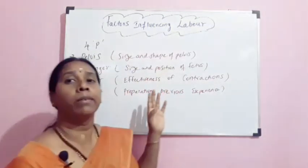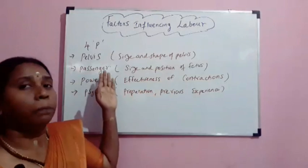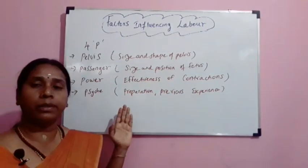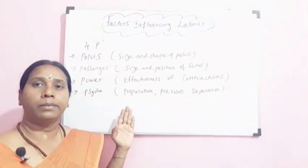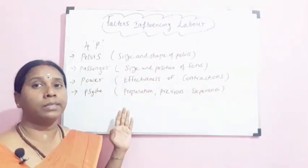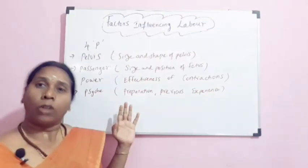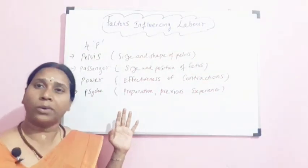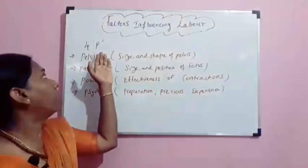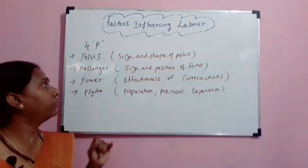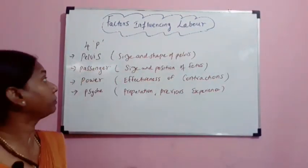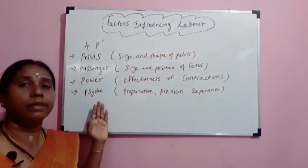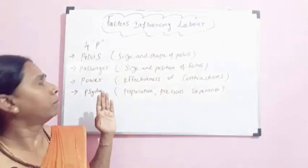We have four Ps. With these four Ps, you are going to determine whether the labour is going to be a normal labour, abnormal labour, whether it was good or effective. Now, what are the four Ps? The first P is your pelvis, then the passenger, then comes the power, and the psychic condition of the mother.